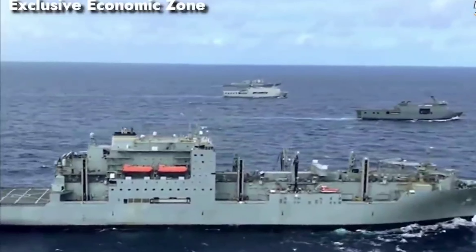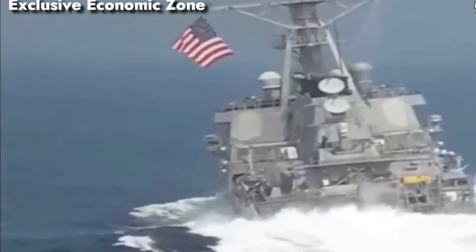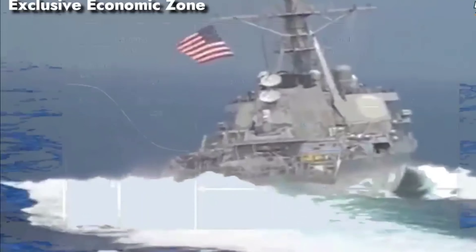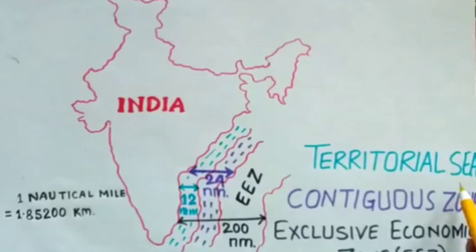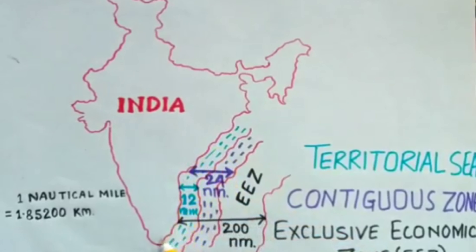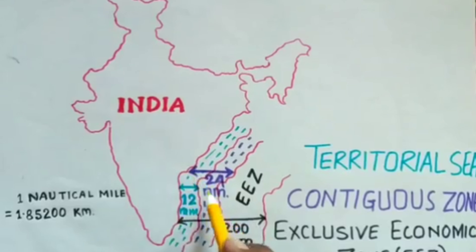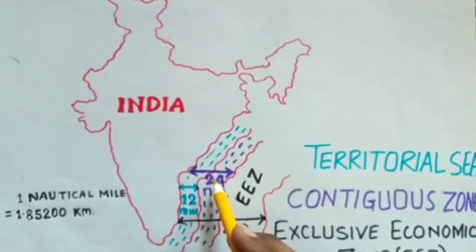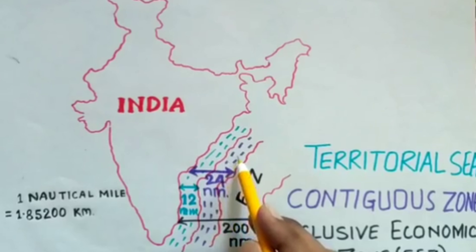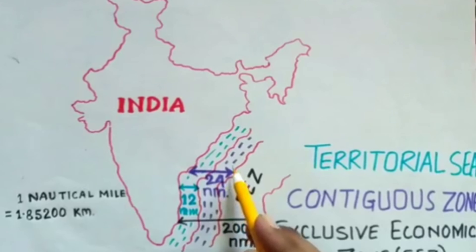Now I am going to show the maps of India — how the zones are divided from India's coastline. Starting from the coastline: 12 nautical miles from the coastline is the territorial sea. After that baseline, up to 24 nautical miles from the coastline of India is the contiguous zone. This area, which you can see marked here, all comes under the contiguous zone area — 24 nautical miles from the coast of India outward to the sea.